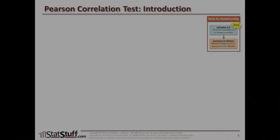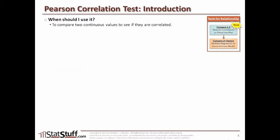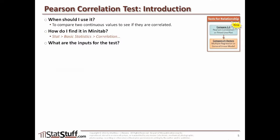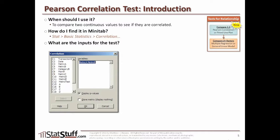Let's talk about how to run the Pearson correlation test from within Minitab. We run this test when we have two continuous values we want to compare to see if they're correlated. In Minitab, go to the Stat menu, select Basic Statistics, and choose Correlation. In this test, the dialog box will appear where you normally select at least two values to compare and run the correlation on.